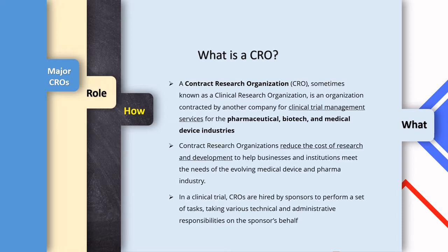Once you develop your molecule, you have to conduct a clinical trial. According to ICH GCP, the sponsor can give some of their responsibilities to a third-party organization, which can perform the clinical trial on behalf of the sponsor. By doing this, CROs reduce the cost of research and development and help these businesses and institutions meet the ever-evolving needs of the pharma and medical devices industry. The sponsor monitors all progress of the clinical trial through the CRO.